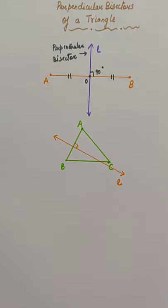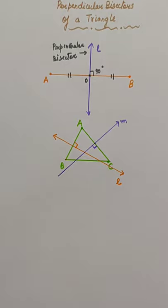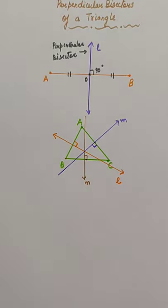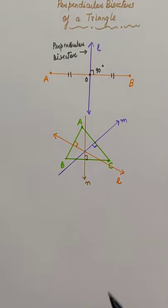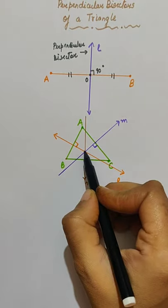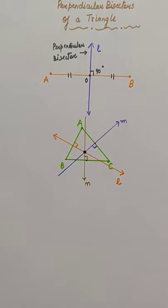L is a perpendicular bisector to side AB, M is a perpendicular bisector to side AC, and N is a perpendicular bisector to side BC. The point at which all three perpendicular bisectors meet is called the circumcenter.